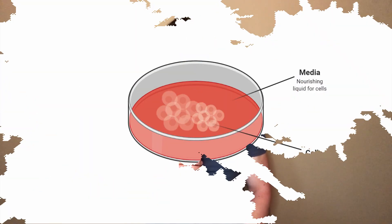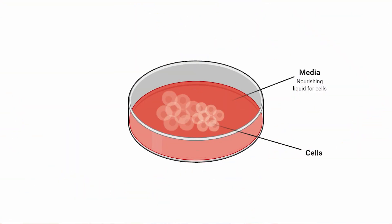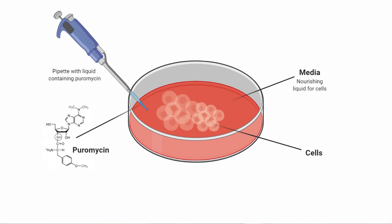So how do we do it? Let's say we're working with cells for this example. We've put our cells onto a plate, which are surrounded by nourishing liquid filled with all the necessary nutrients to keep them alive. And we simply add puromycin, the antibiotic, to the liquid for some time.